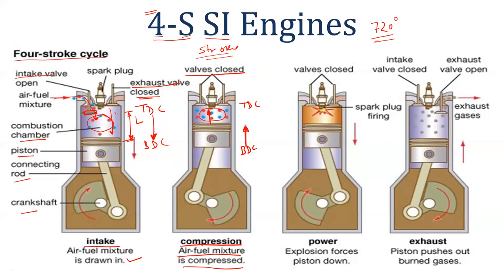At the end of the compression stroke, when the piston reaches TDC, further upward movement is not possible. At this point, there is a spark plug. The spark is initiated by the spark plug, and combustion of the fuel begins at constant volume. This completes the second stroke.